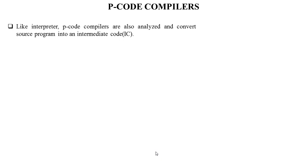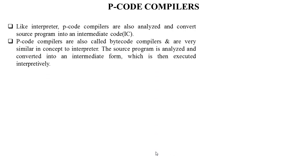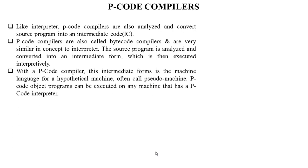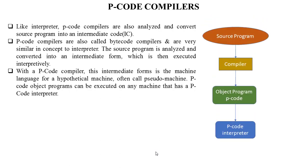A P-code compiler, also known as a pseudo-code compiler, analyzes and converts the source program into an intermediate code, similar to an interpreter. P-code compilers are also called bytecode compilers and are very similar in concept to interpreters. The source program is analyzed and converted into an intermediate form which is then executed interpretively. With a P-code compiler, this intermediate form is the machine language for a hypothetical machine, often called a pseudo-machine. P-code object programs can be executed on any machine that has a P-code interpreter.